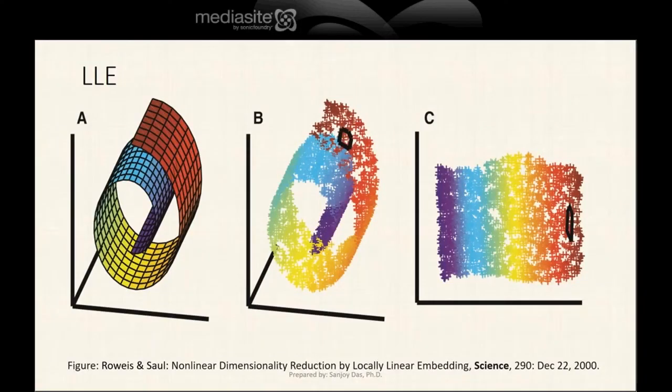This is LLE's performance for the Swiss roll. This is the Swiss roll on your left, and these are the sample points taken upon the Swiss roll. This is after LLE unfolded the manifold. This square shown in B translated to this after LLE did the unfolding.